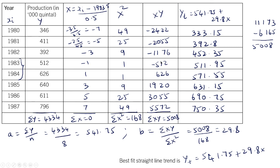In all the questions, we have obtained a straight line trend as yt equal to some constant a plus constant b into x. There are cases where we may get this b value as negative. If b is positive, it shows an increasing trend. If b is negative, it shows a decreasing trend. If we get a b value as negative in a question, we need not worry — we just have to find the trend values with a negative sign. I hope this video was useful for you. Thank you for watching.